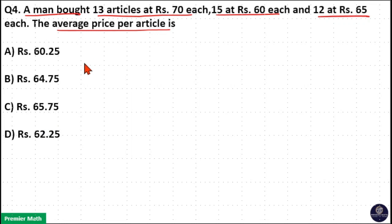Here, 13 articles average price is Rs. 70 and 15 articles average price is Rs. 60 and 12 articles average price is Rs. 65. Now, we need to find out the average price per article.